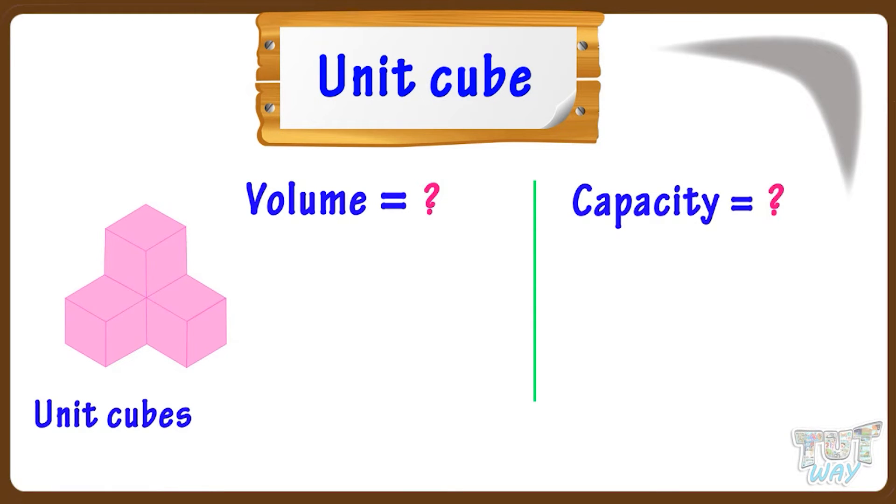For that, first of all, we will find out it is made of how many unit cubes. Let's see. Three cubes at bottom and one above. So it's made of four unit cubes.